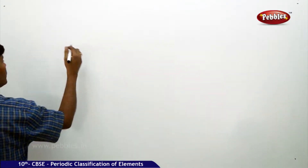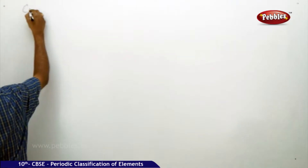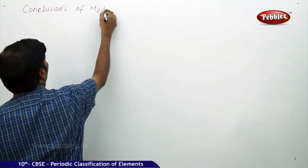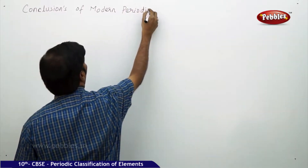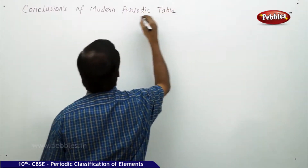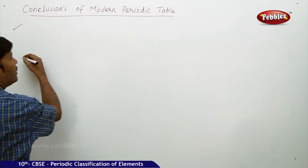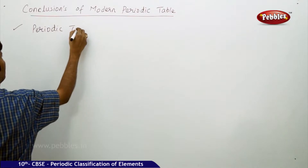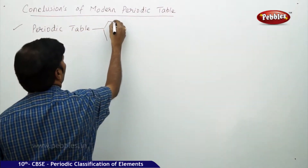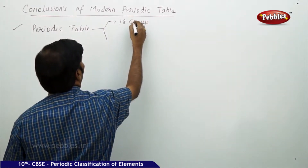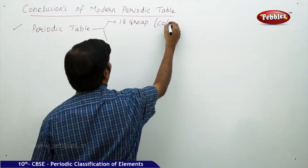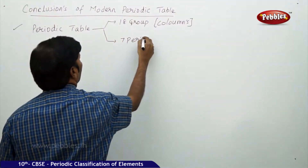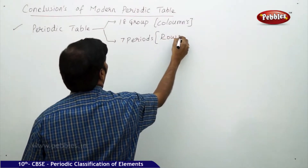Let us continue. The next part of the discussion is the modern periodic table conclusions. According to the modern periodic table, the periodic table is made of 18 groups, also called columns, and 7 periods, which we also call rows.